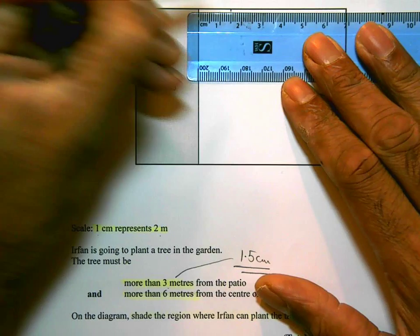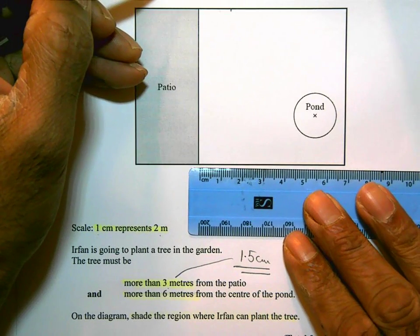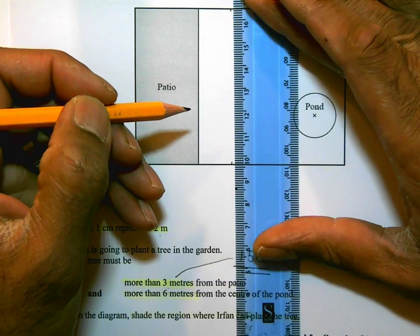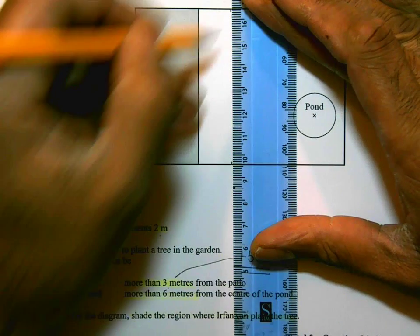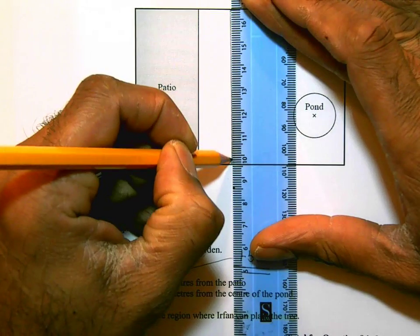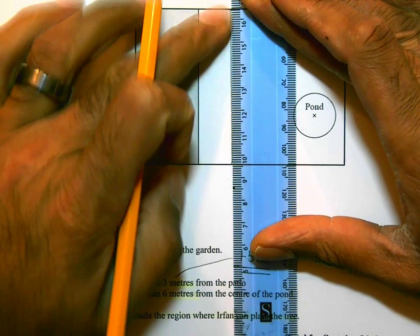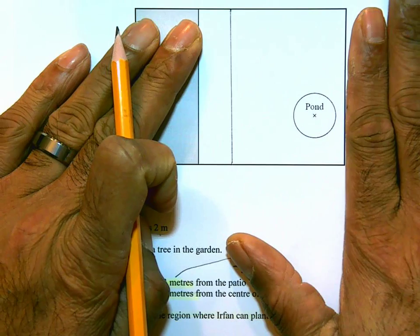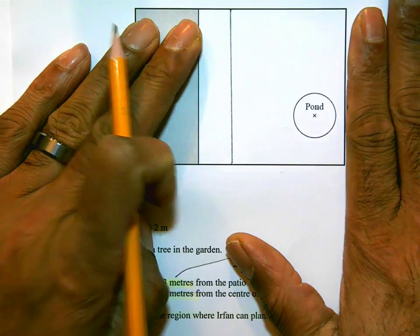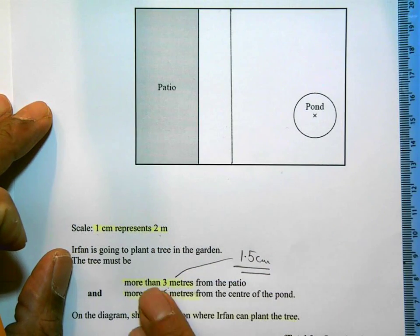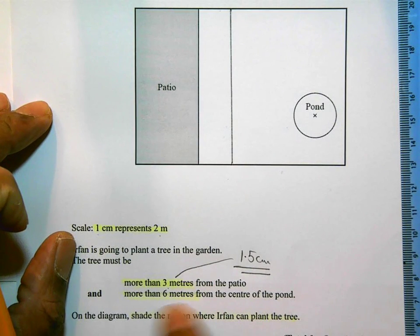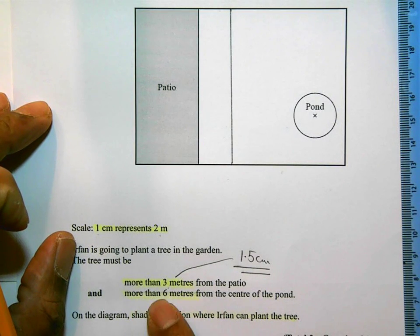Come down here, mark one and a half centimeters. And then this line here, he can't plant any trees here. He could plant trees to the right of that line. So to the right of that line, that would be more than three meters from the patio. The next condition is, it needs to be more than six meters from the center of the pond.